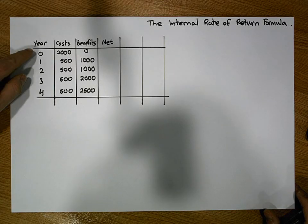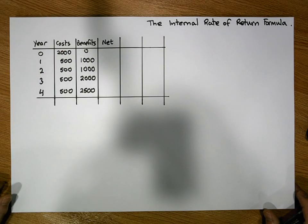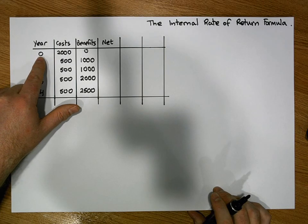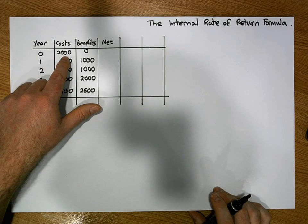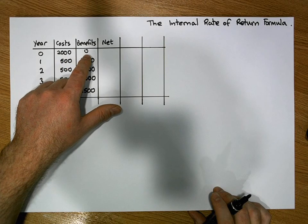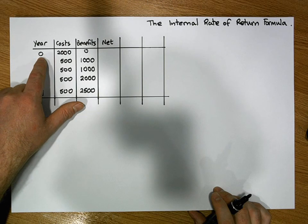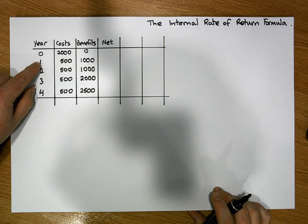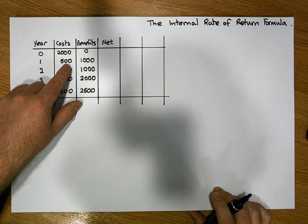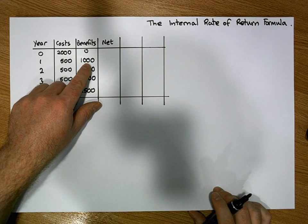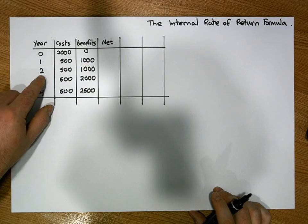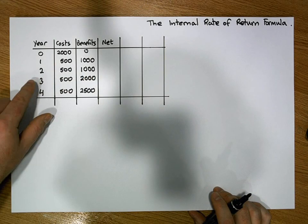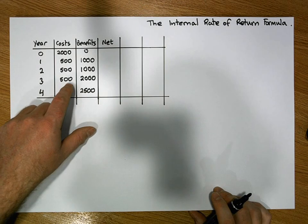This project is going to have a number of costs and benefits associated with it, detailed in the table here. The initial start-up costs for this small company are going to be €2,000, with no income generated today at time zero. After the first year, costs will be €500 and income achieved will be €1,000. After two years, costs will also be €500 with income of €1,000.